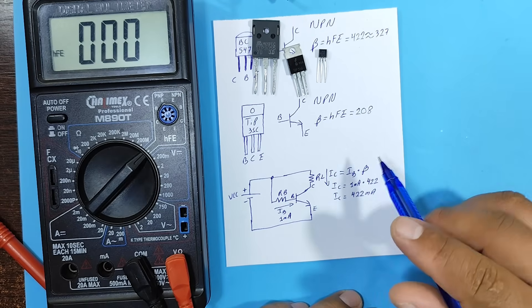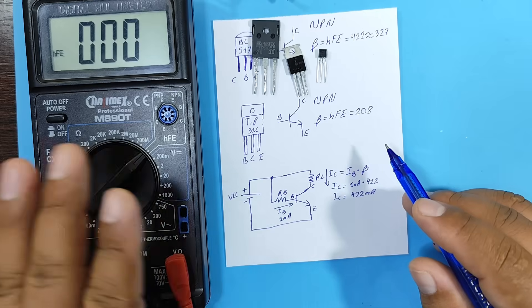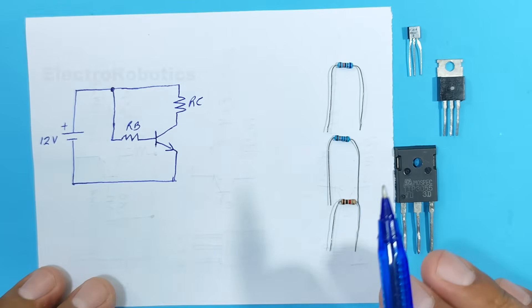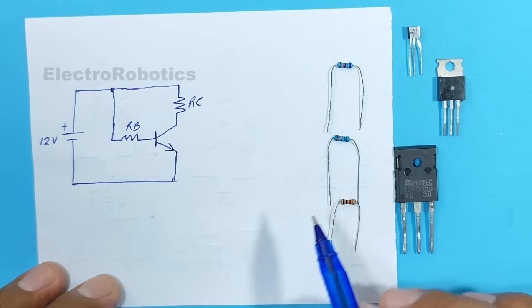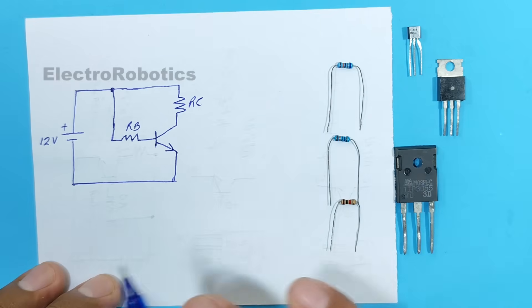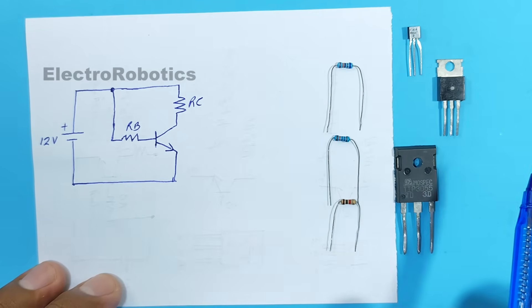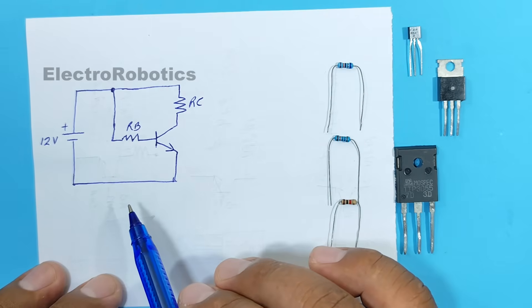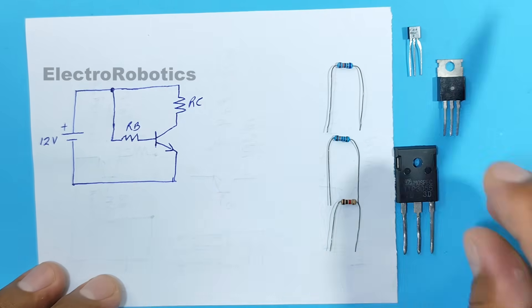Okay. Now let's see how we can obtain the gain without any instruments. Now we're going to obtain the gain of our transistors without using any measuring instruments. For that, we have to build this circuit, in which we see that we have a transistor and two resistors.